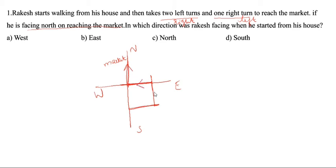This is the symbol — you can turn. This is the house. Let's study the question once again. Rocky starts walking from his house and takes two left turns. Stand here — this is the right turn, this is the left turn, one left turn. After that you stand here — this is the right turn, this is the left turn, two left turns as per the question. After that, one right turn. Then if he is facing north on reaching the market — facing north on reaching the market.